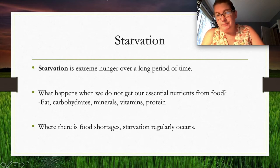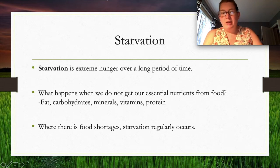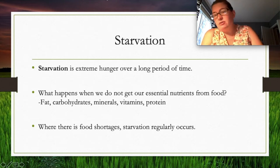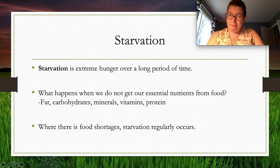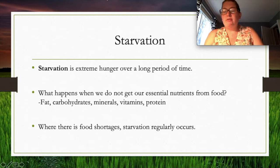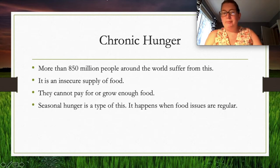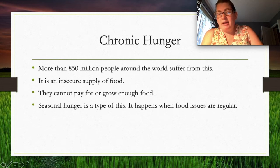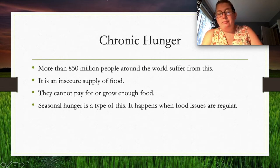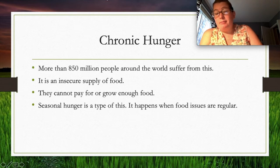Starvation is extreme hunger over a long period of time — when you say you're starving, you're technically not correct. Starvation happens when you don't get essential fats, carbohydrates, minerals, vitamins, and proteins over a sustained period. Chronic hunger is different: more than 850 million people around the world suffer from it — meaning they don't have access to a reliable food source or can't grow or pay for enough food to support themselves.